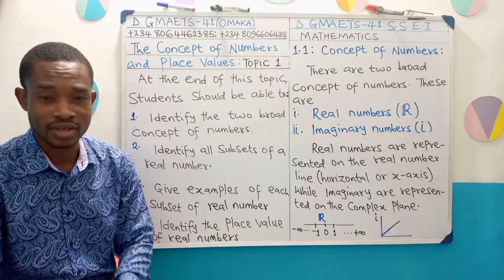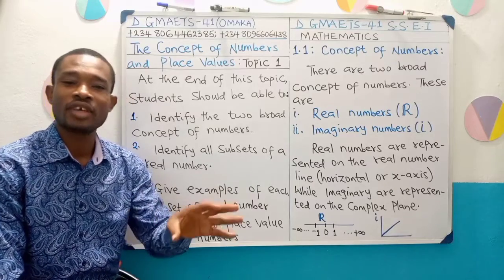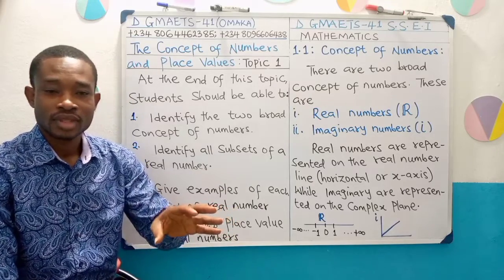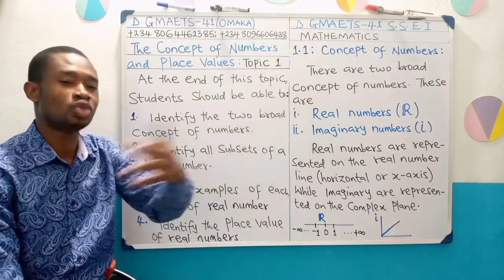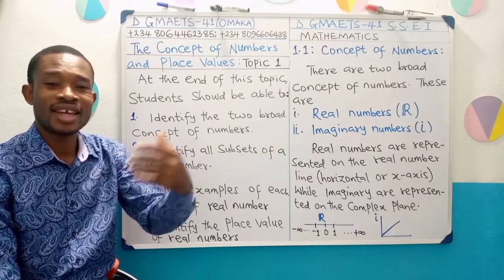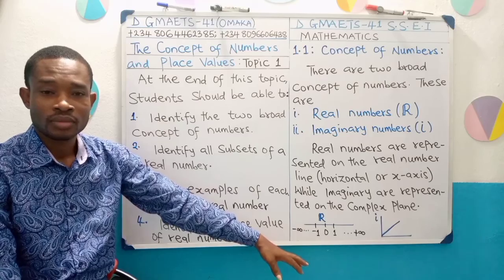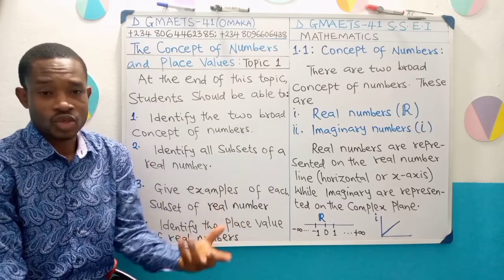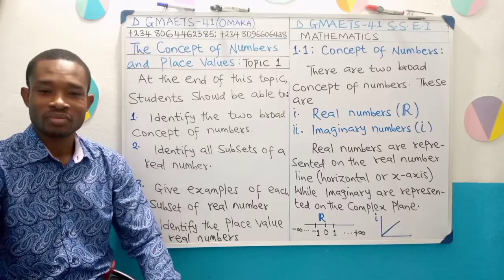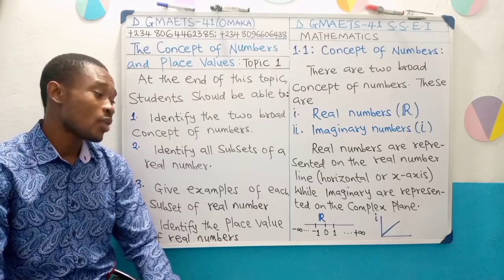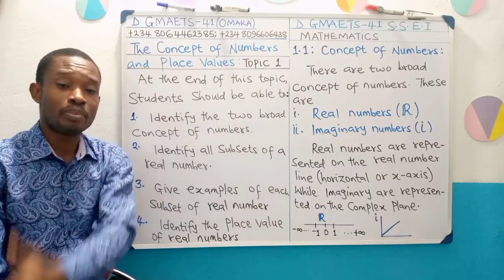Let me quickly say this: we don't have any number called infinity. The concept of infinity as used here is simply to show the boundary — the endpoint — of our real numbers. As we know, our real numbers, we don't know where they end. That's why we use infinity to serve as the boundary.